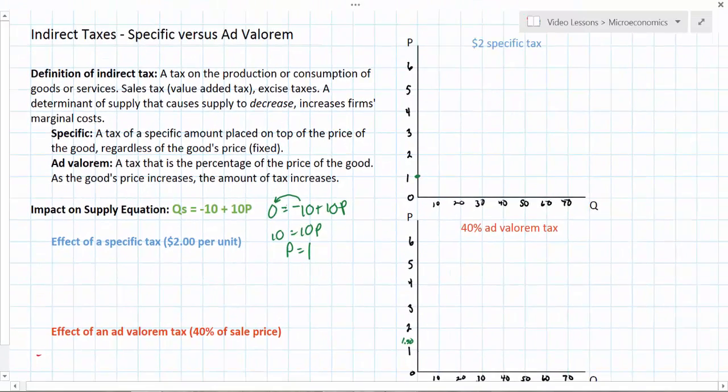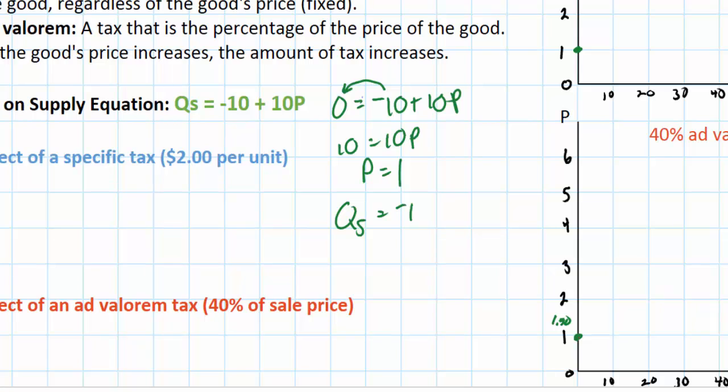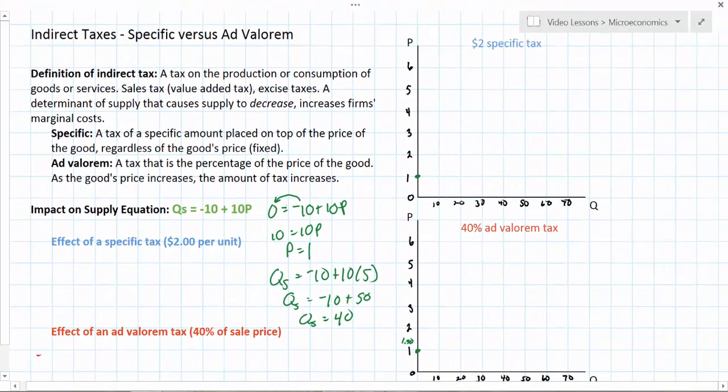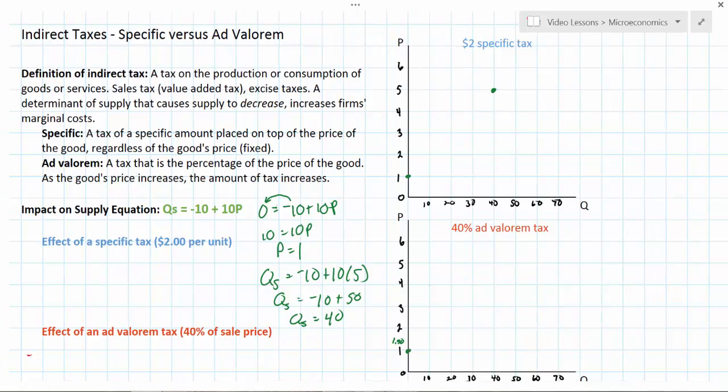So I'm going to graph the first supply curve on both of my graphs here. All I need is one other point on my supply curve so let's see what the quantity supplied is at a price of 5. I can do Qs equals negative 10 plus 10 times the price of 5 and I get Qs equals negative 10 plus 50 or Qs equals 40. So now I have a second point for my supply curve. At a price of $5 the quantity supplied will be 40 on this original supply equation.